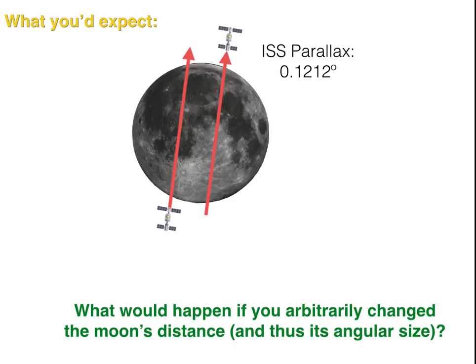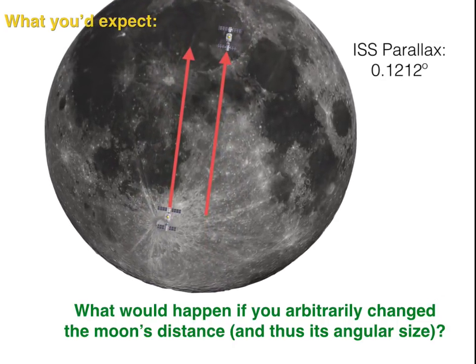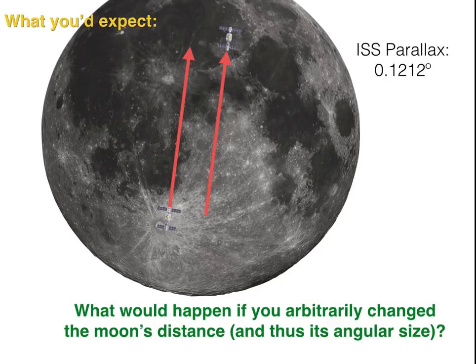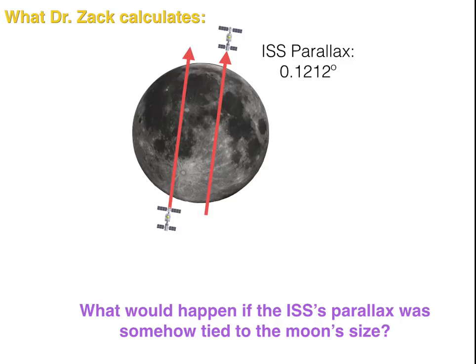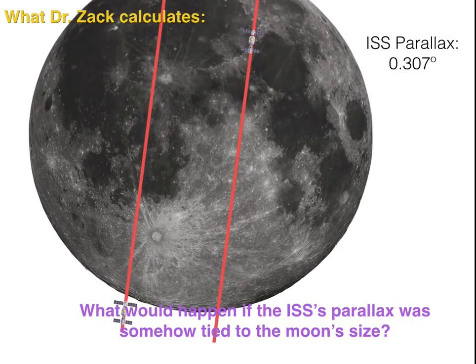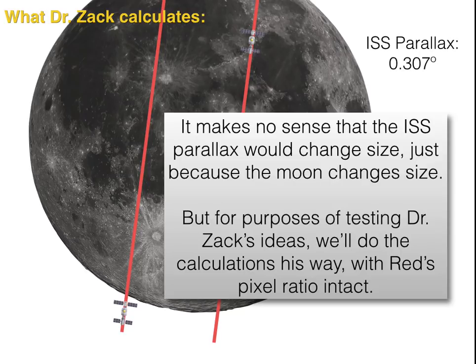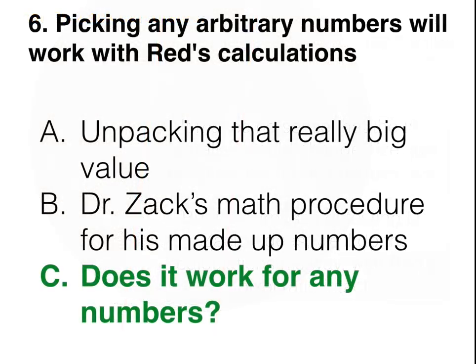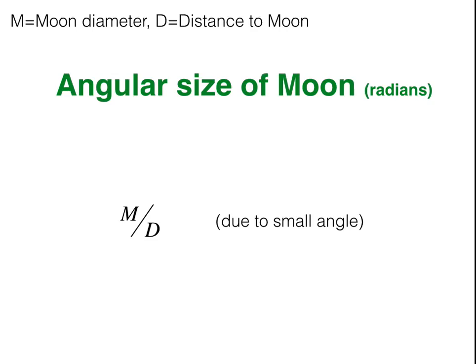Let's visualize this: if you have this parallax track of the ISS and then arbitrarily change the distance to the moon — the parallax track would not change, the angular size of the moon would change, but the parallax track wouldn't, because the ISS isn't changing its orbit. What you're suggesting, Dr. Zack, is that the parallax track of the ISS in Earth's orbit would change if you change the size of the moon, and that simply doesn't make any sense. But for purposes of our analysis, let's say you're right and run the numbers using your method.